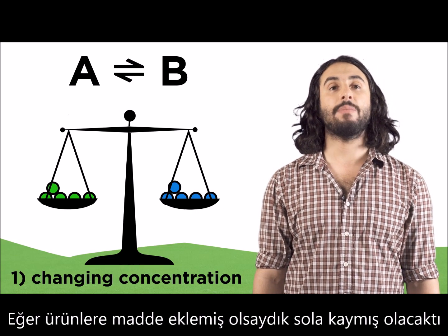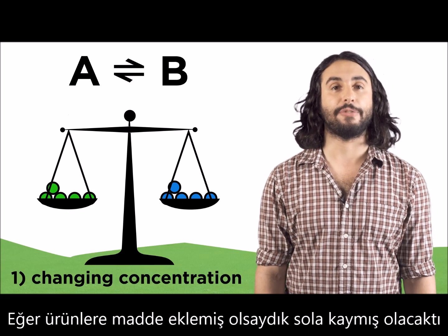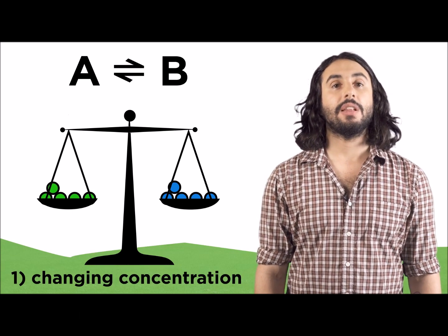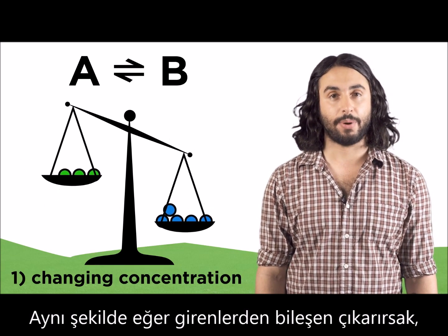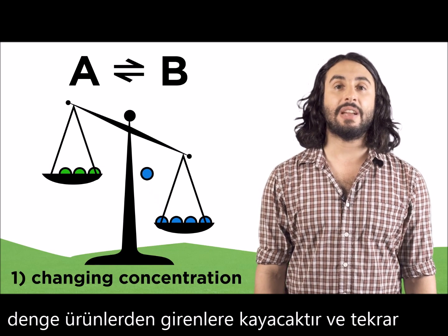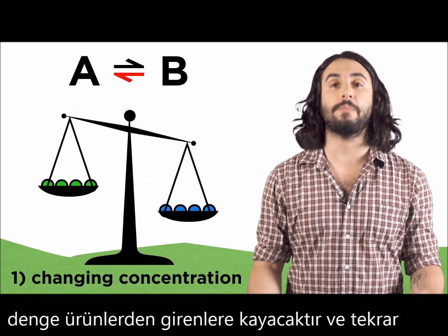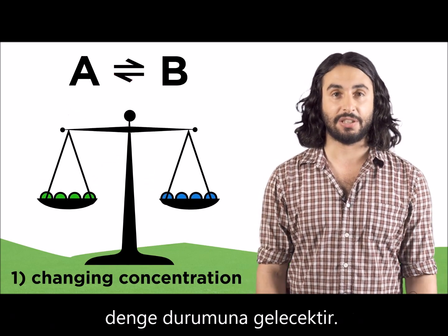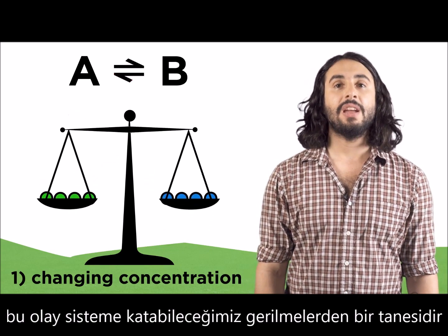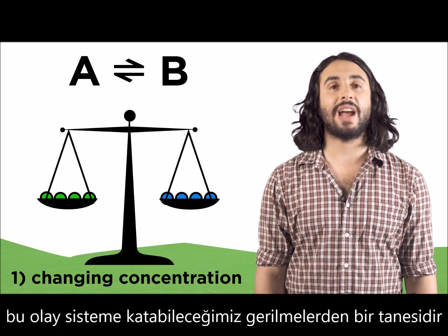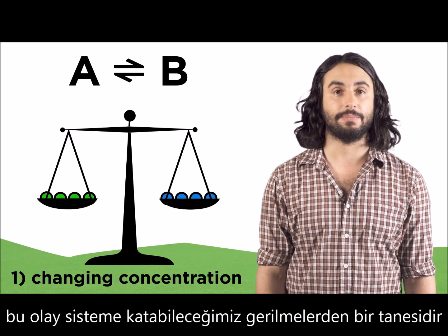If we add more products, it would shift left. Likewise, if we selectively remove one of the components, the equilibrium will shift to produce more of that species to restore balance. That is one type of stress we could put on a system.